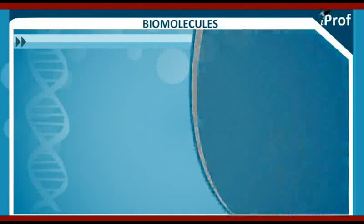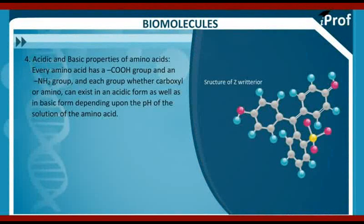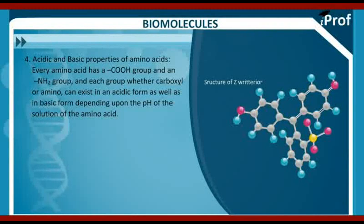Acidic and basic properties of amino acids. Every amino acid has a COOH group and an NH2 group. Each group, whether carboxyl or amino, can exist in an acidic form as well as in a basic form, depending upon the pH of the solution of the amino acid.